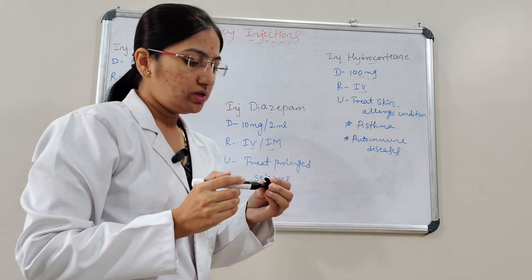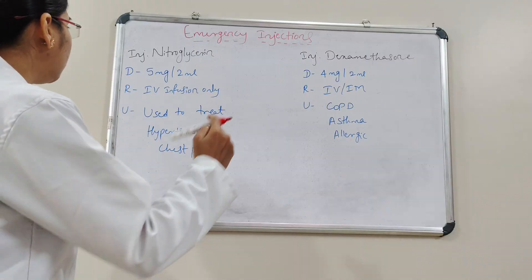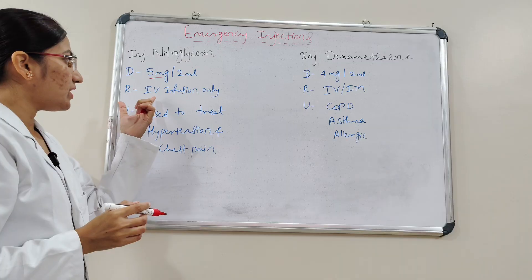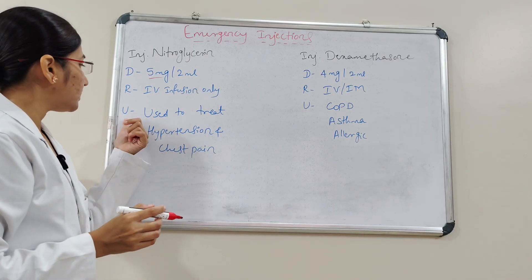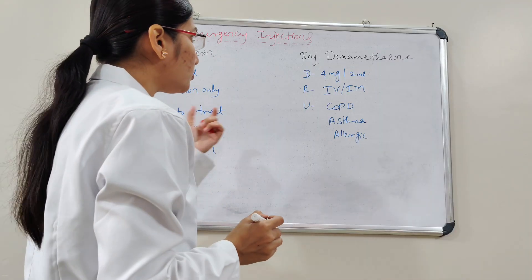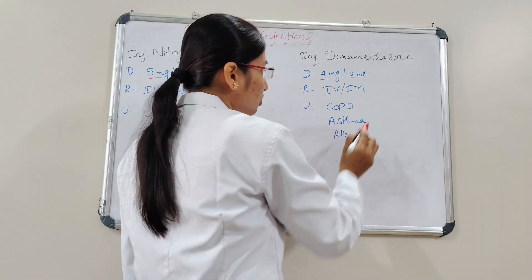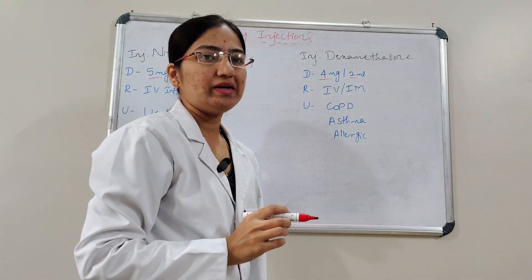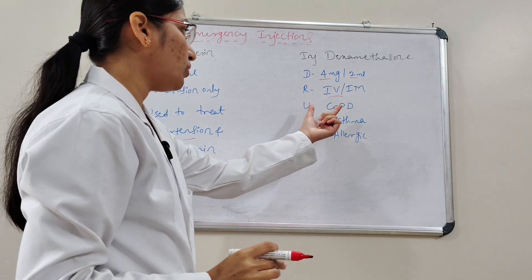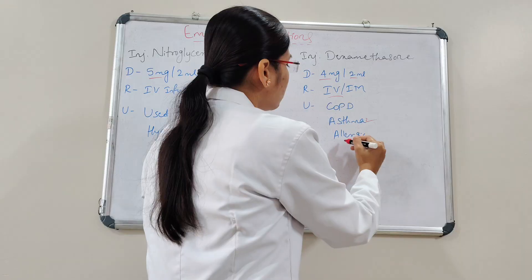The next injection is Nitroglycerin. The dosage is 5 mg per 2 ml, route is intravenous infusion only. It is used to treat chest pain, angina, and also asthma and allergic conditions.